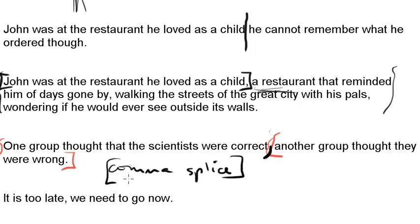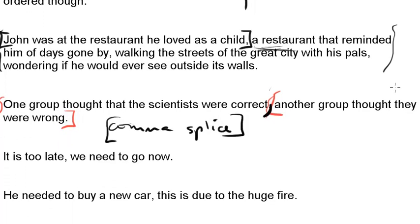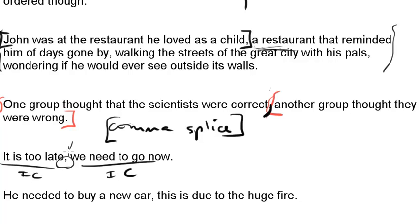This is the major error that we see all the time, and you will see this on the SAT. Here's another example: 'It is too late, we need to go now.' 'It is too late' is an independent clause. 'We need to go now' is an independent clause. We can't just have a comma separating them — we need something else. This is another comma splice.